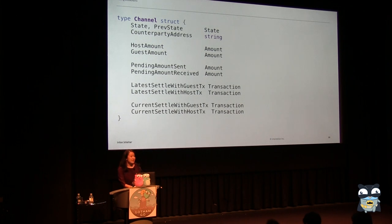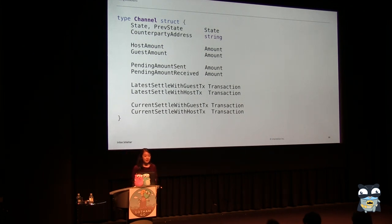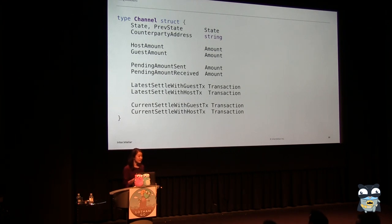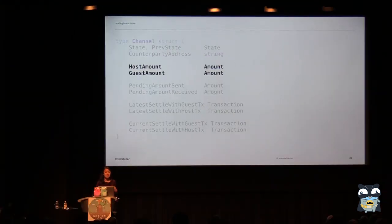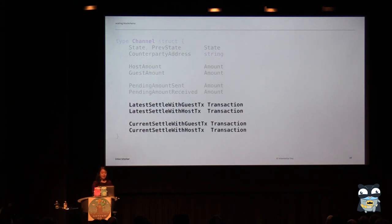Each agent keeps track of many channels, and these channels are pure data — designed to be really easily marshaled and unmarshaled from JSON so we can stick them in Bolt. The channel keeps track of some state, manages the amounts owed from both parties in the channel, and we also have transactions being sent back and forth and signed by both parties in case of settlement.